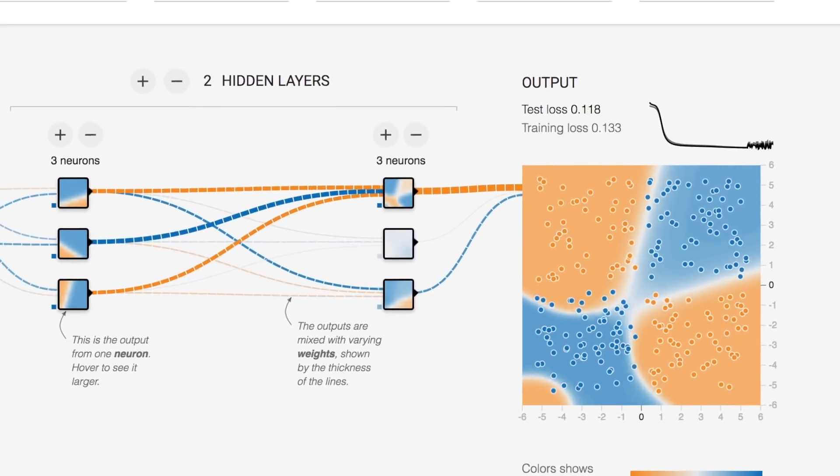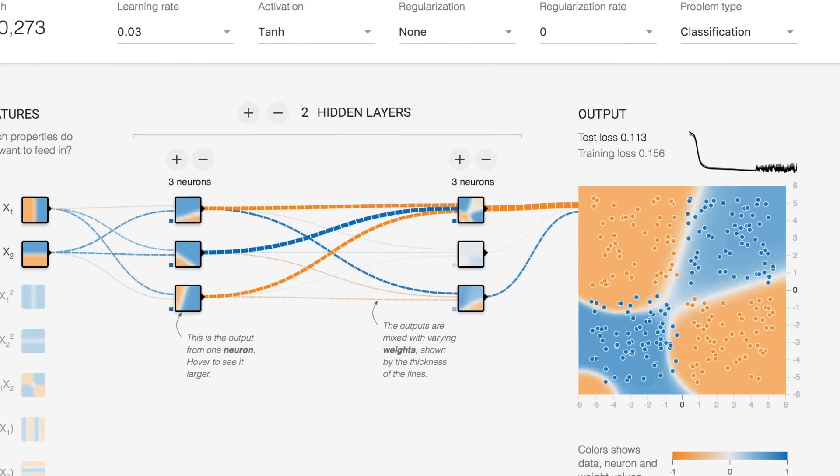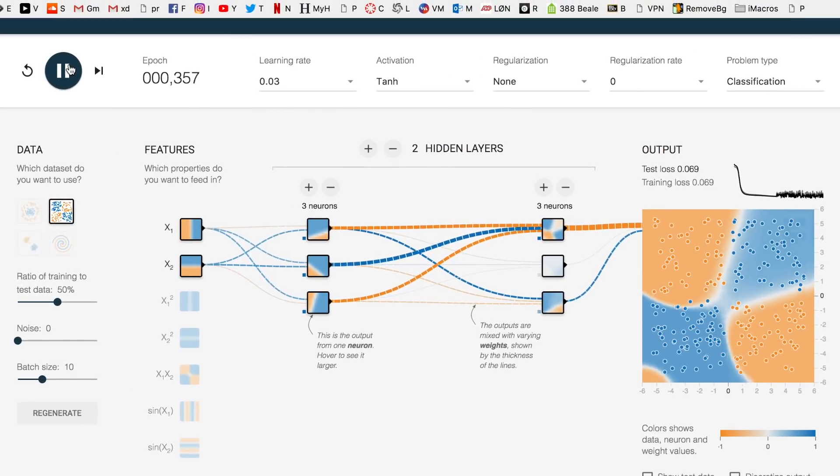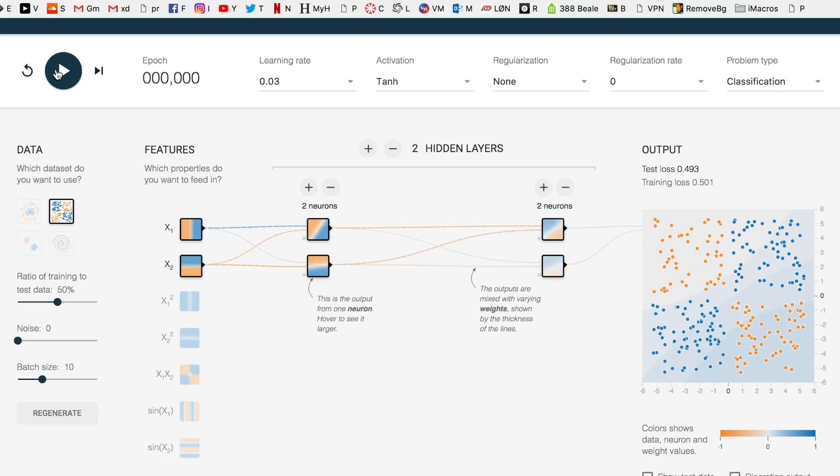Depending on how you arrange the dots, you create different problems for the artificial intelligence. If you are able to split the dots into two different categories by a single line, then we call it a linear problem. The more complicated the structure, the harder it is for the machine and the more processing power and hidden layers you need.